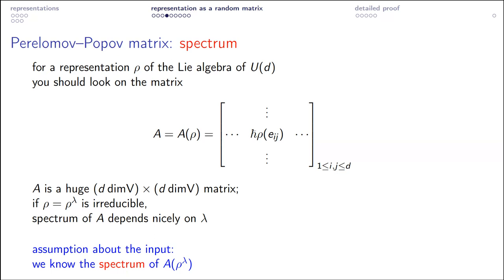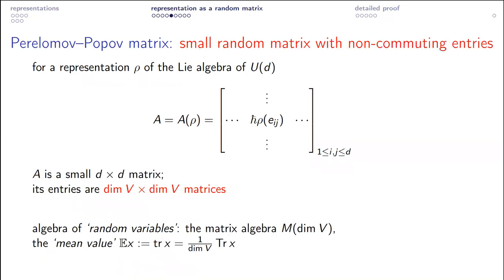Zhelobenko calculated the spectrum not via characters — it is related, but that would be a good question for the coffee break. Let us continue looking at this Perelomov-Popov matrix paradigm, but now change the perspective. Zhelobenko looked at this matrix as a huge matrix; now I want to look at it differently — as a small d×d matrix whose entries are themselves matrices.